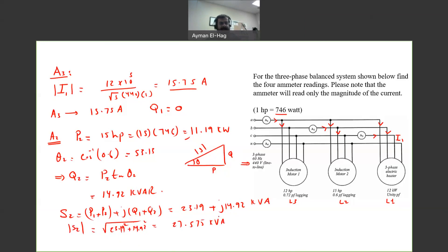From this I can find the reading of a2. I2 as a magnitude is equal to S, which is 27.575 times 10 to the 3, divided by root 3 times 440, which gives me a current equal to 36.18 amp.